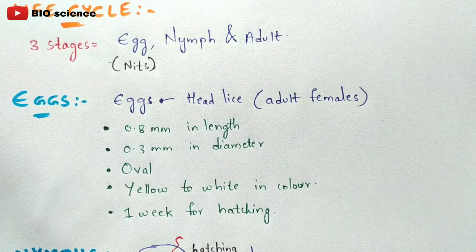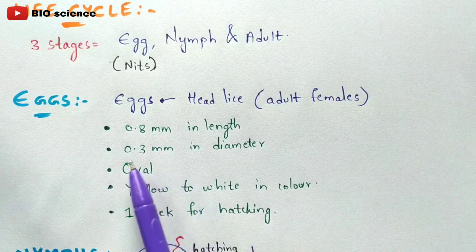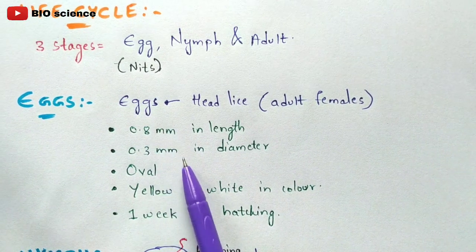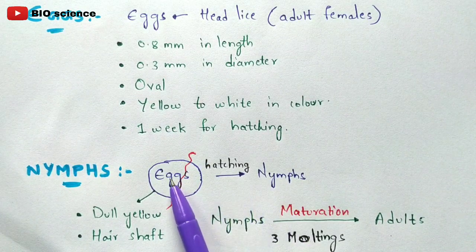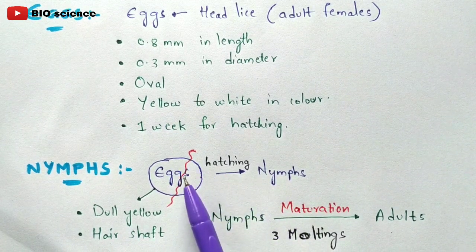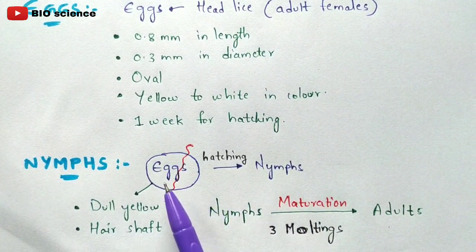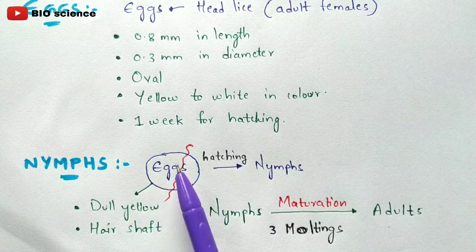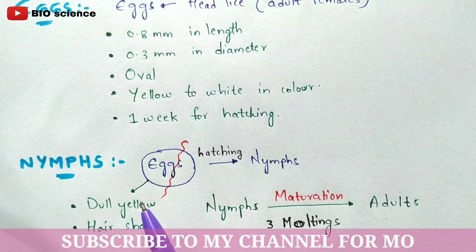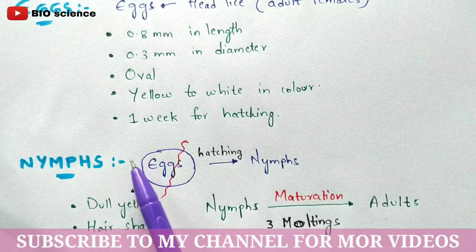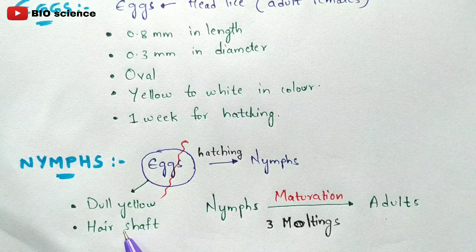The egg period before hatching is one week. After one week the egg gets hatched and the nymph protrudes out — one nymph per egg is released. After hatching, the empty shells remain dull yellow in color and settle on the hair shaft.